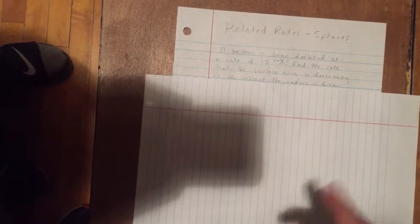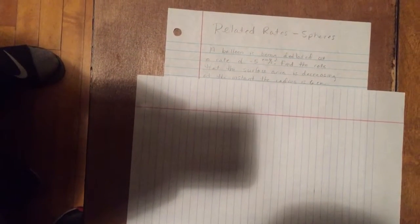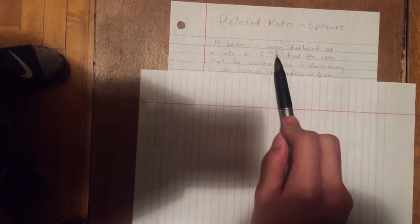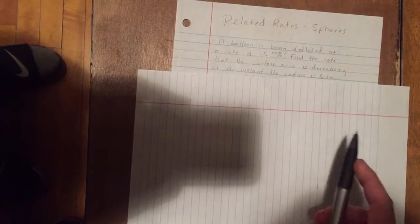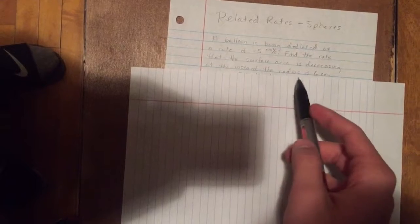All right, so I'm going to work out a problem on related rates involving spheres. Here we have a balloon that's being deflated at a rate of negative 5 centimeters cubed per second. So since it says cube, that means that's the volume. Now we need to find the rate that the surface area is decreasing at the instant the radius is 6 centimeters.